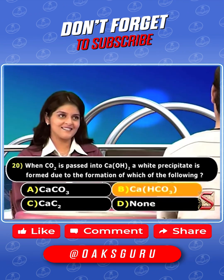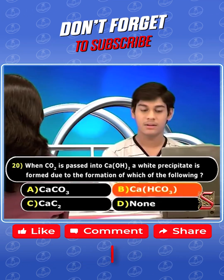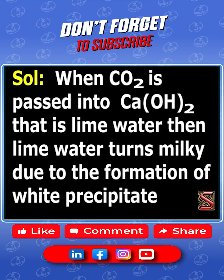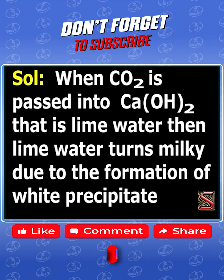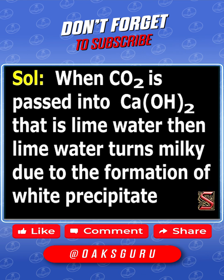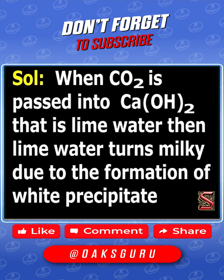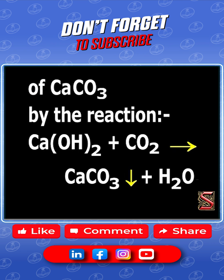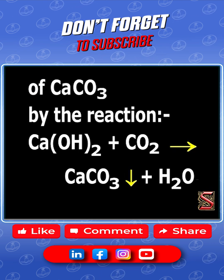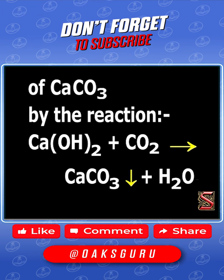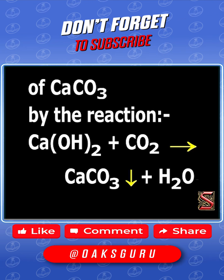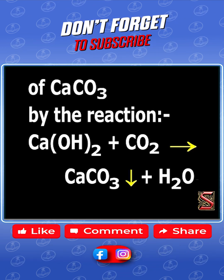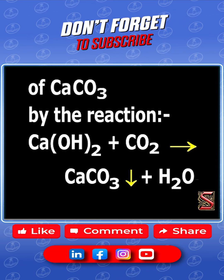Option B is the wrong answer. When CO₂ is passed into Ca(OH)₂, that is lime water, lime water turns milky due to the formation of a white precipitate of CaCO₃ by the reaction: Ca(OH)₂ + CO₂ → CaCO₃ (precipitate) + H₂O.